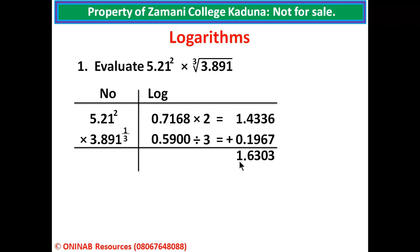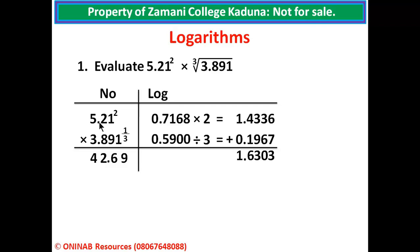We now go ahead to find the antilog reading of 1.6303. Considering the fractional part on the antilog tables, check 63 under 0, differences of 3, giving 4269. Coming back to the integer part, which is 1, we add 1 by custom making it 2. We count 2 digits and place the decimal point, so the solution gives 42.69.